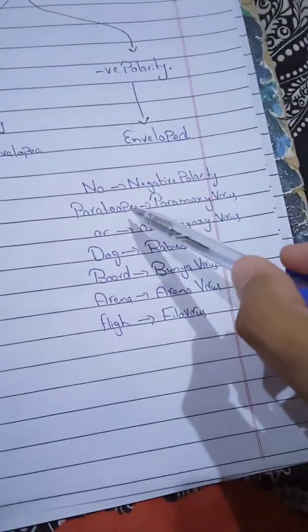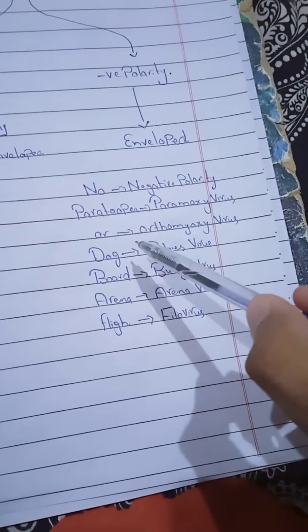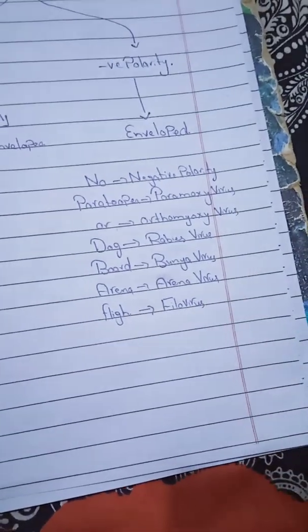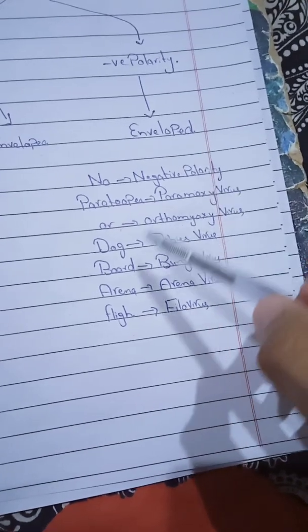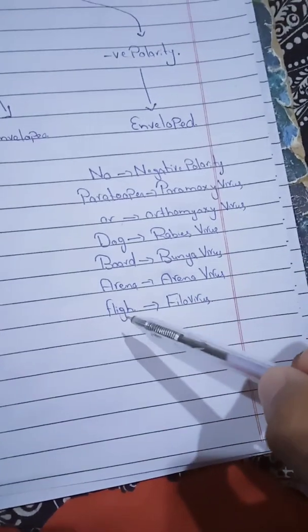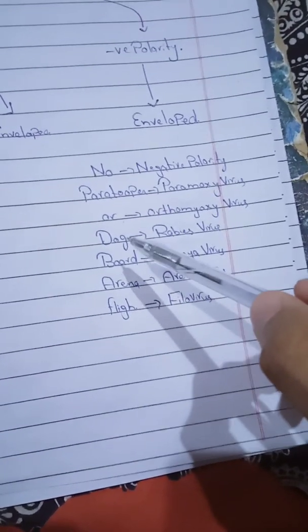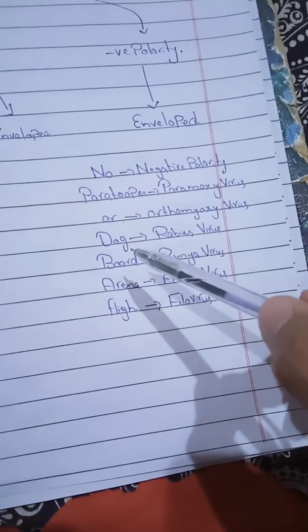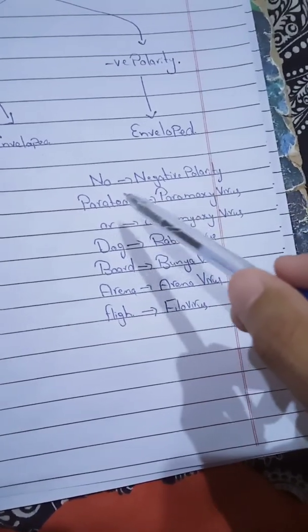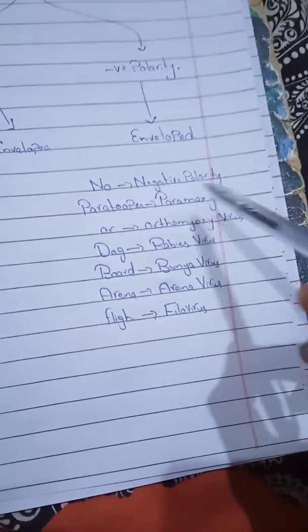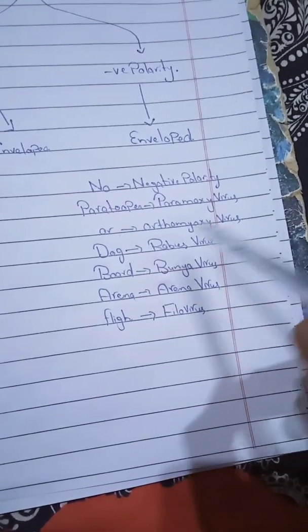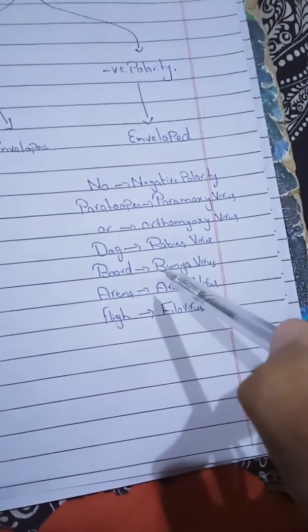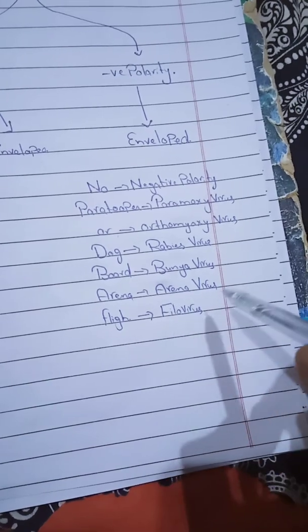So the full mnemonic is: 'No Para Tupper Or Dog Board Ariana Flight.' Think of para-troopers jumping from a high flight with dogs — No means negative polarity, Para Tupper is Paramyxovirus, Or is Orthomyxovirus, Dog is Rabies virus, Board is Bunyavirus, Ariana is Arenavirus, and Flight is Filovirus.